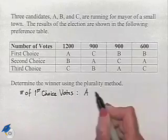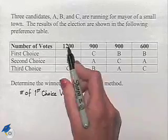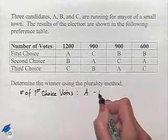Let's start with candidate A. We notice that candidate A appears in our first choice row only in this first column where we have 1,200 votes.